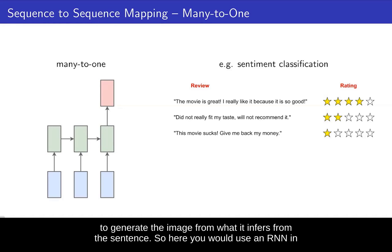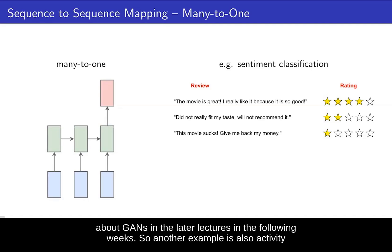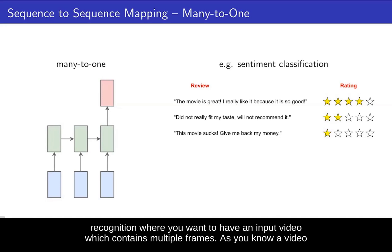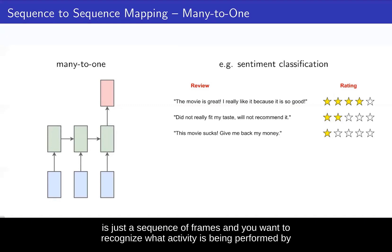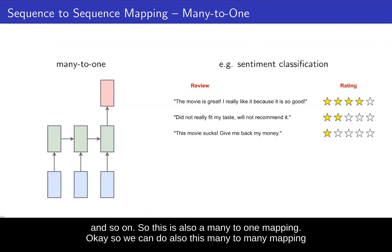For that you would use an RNN in combination with a fully convolutional GAN or generative adversarial network — you will learn about GANs in later lectures. Another example is activity recognition, where you have an input video containing multiple frames — a video is just a sequence of frames — and you want to recognize what activity is being performed by a person, for example, jumping or running. So this is also a many-to-one mapping.